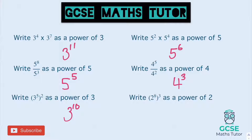And two to the power of eight to the power of three, we're going to multiply — so eight times three is 24 — two to the power of 24. All right, let's have a look at some slightly harder ones, where some of them are blended together.